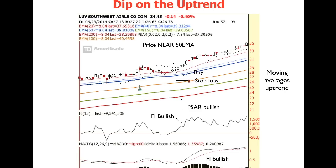So let's recall in the Wealth Academy program, you've learned a couple of optimal entry setups. One of the main entry setups is entering the dip on the uptrend. You want to ensure that the price is on a very clear uptrend — a short-term uptrend, a medium-term uptrend — where the 20 EMA is above the 40 EMA, and the 50 moving average is above the 150 moving average.